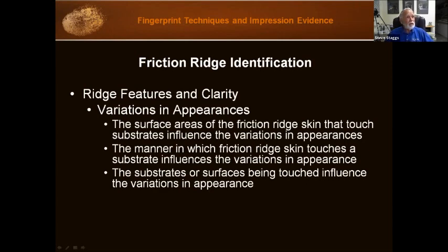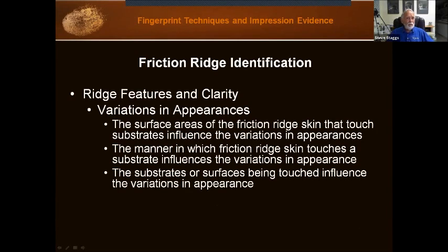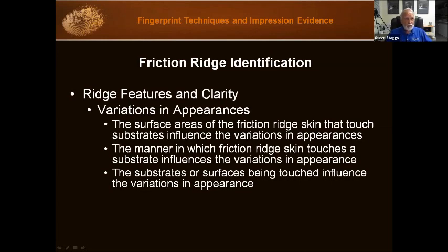The residues on the friction skin when the skin touches a substrate influence the variations in appearance. Sweat, oil, and blood are common residues that cause variations. Oils, dust, blood, or other residues are also common on substrates themselves. The types and amounts of residues and their interactions will influence variations with each touching. It would be nice if it were simple — you touch something and leave a print — but there are so many factors involved.